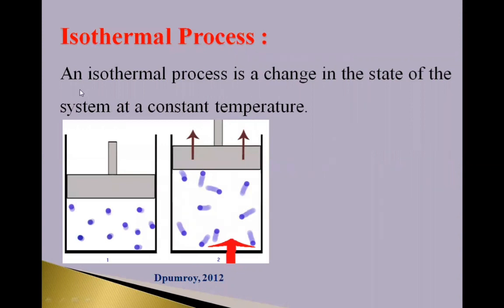An isothermal process is a change in the state of the system at constant temperature. See here in this figure, a cylinder with frictionless piston is shown. And here, this is working substance gas.